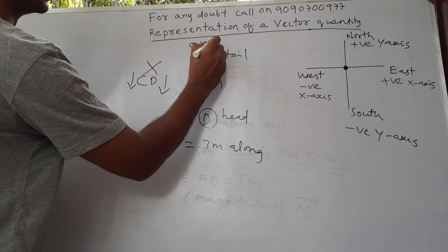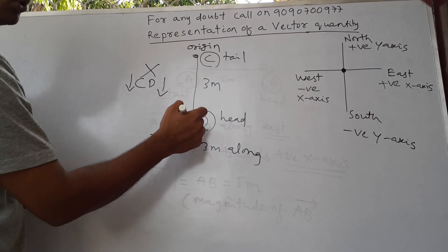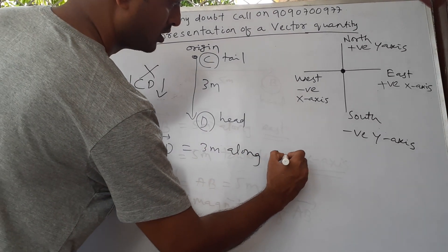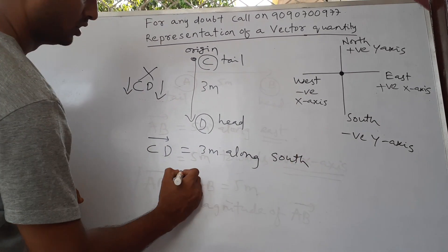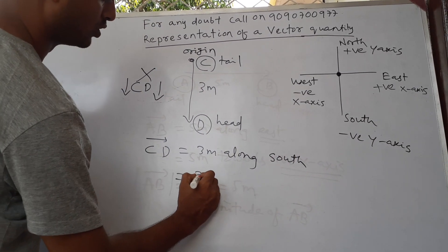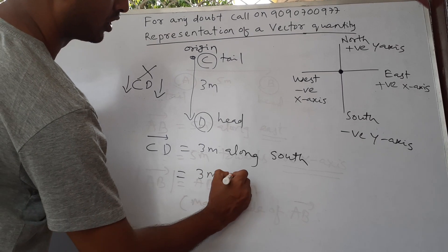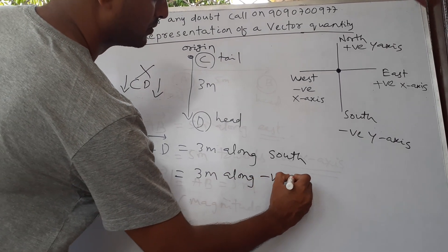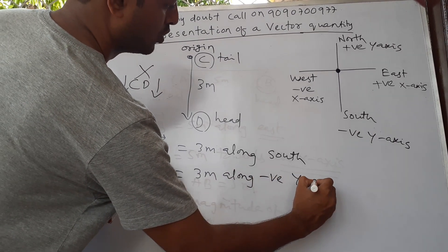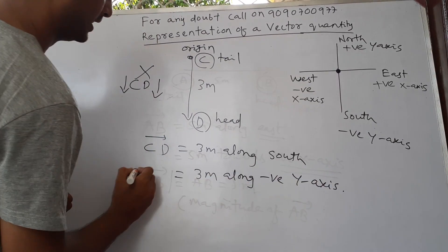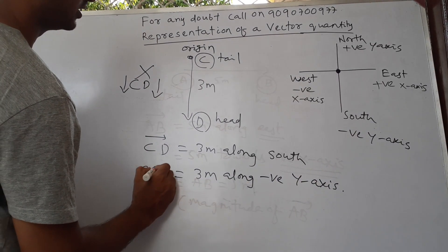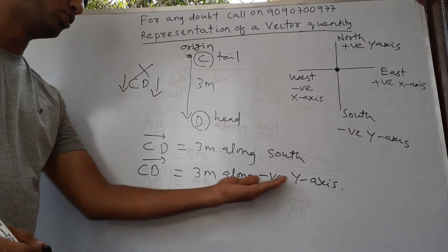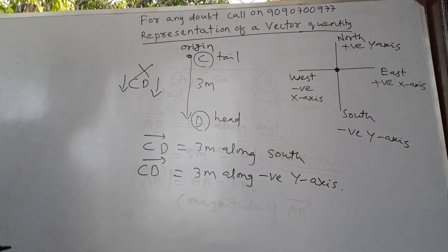Vector CD will be 3 meters along south. If I put my origin at the tail and move downward, it is 3 meters along south — I can also write 3 meters along negative y-axis. So CD is a vector quantity because I have given magnitude and assigned a direction.